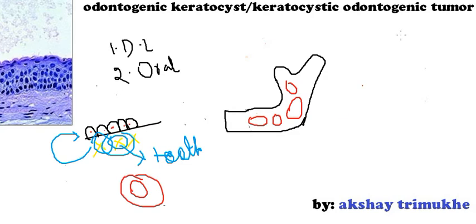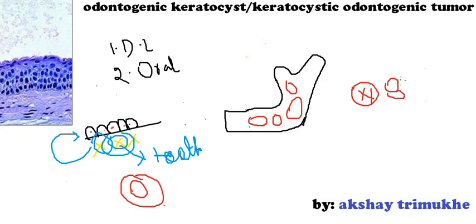Now we are going to talk about the radiographic features. When the Odontogenic Keratocyst is smaller in size, it gives a soap bubble appearance. When it is larger in size and divided into several compartments, it gives a honeycomb appearance. So that's about the radiographic features.